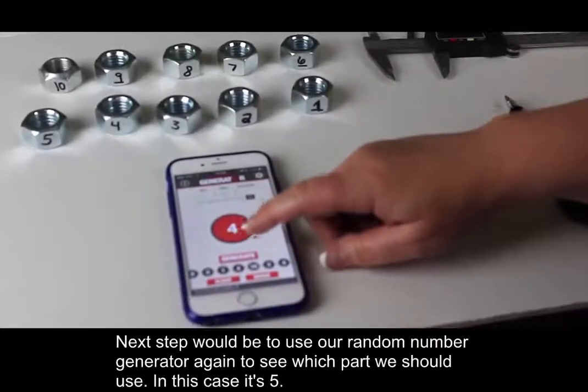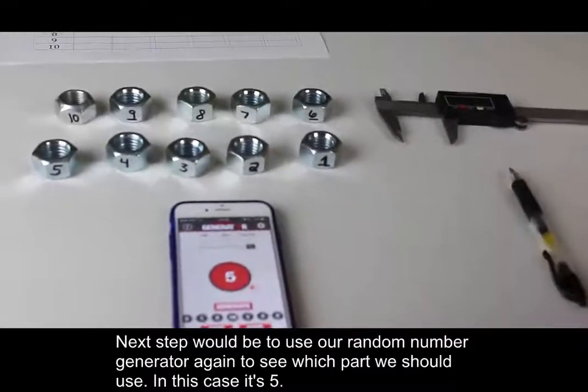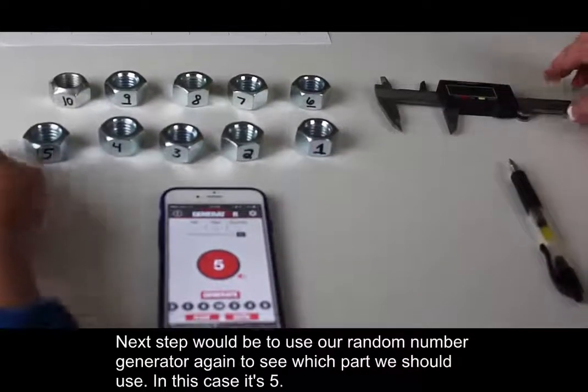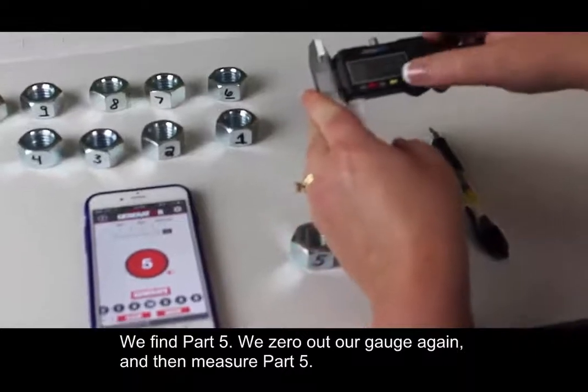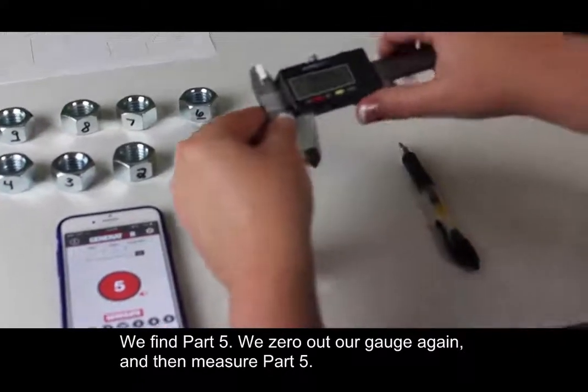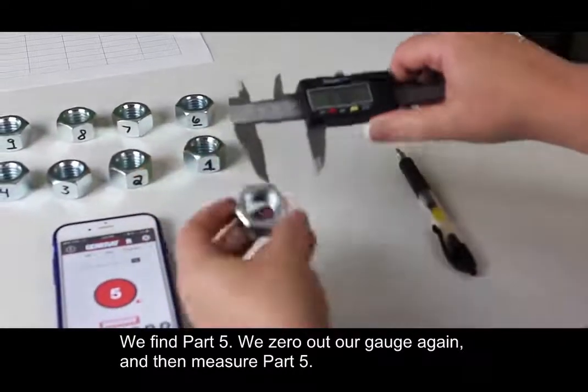The next step would be to use our random number generator again to see which part we should use. And in this case, it's 5. So we'd find part number 5 then. We would zero out our gauge again, and then measure part number 5.